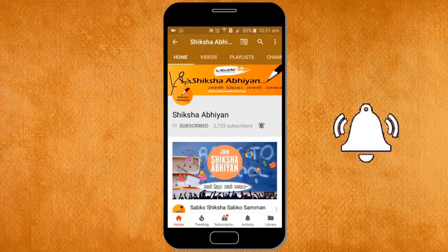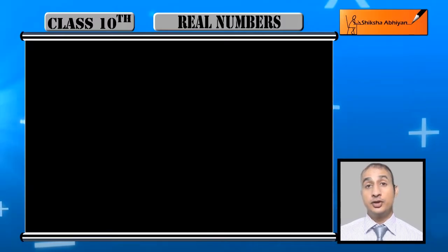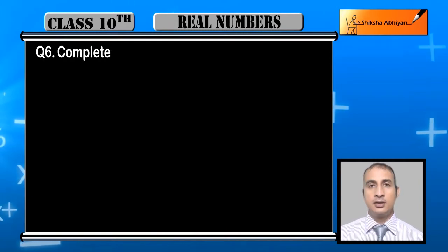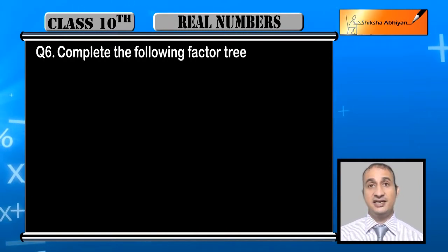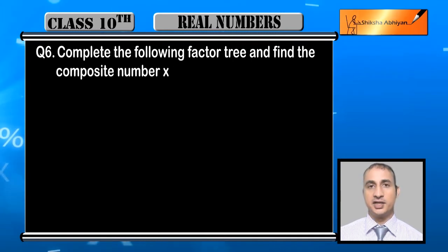Now students, see the sixth question: Complete the following factor tree and find the composite numbers x and y.